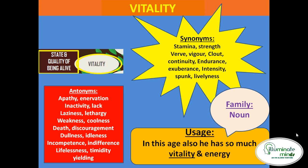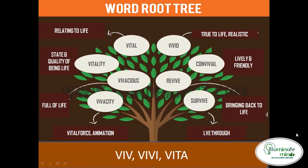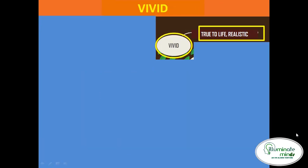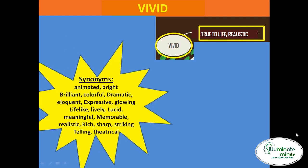The next word is 'vivid', meaning true to life, realistic. Hindi mein hum isko bol sakte hain 'jwalant', 'ujwal'. Synonyms are: animated, bright, colorful, brilliant, expressive, lively, lucid — lucid means clear, jiska matlab hota hai jo bolne mein bhi achcha ho ya jo bahut eloquent ho.